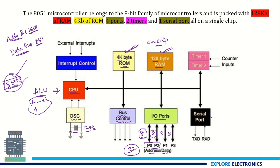There is also a serial port for external communication. It consists of two pins: one transmitting data pin (TXD) and one receiving data pin (RXD). To transmit data from the microcontroller, we use TXD; to receive data from an external device, we use RXD. This communication is full duplex, meaning transmission and reception can happen simultaneously.